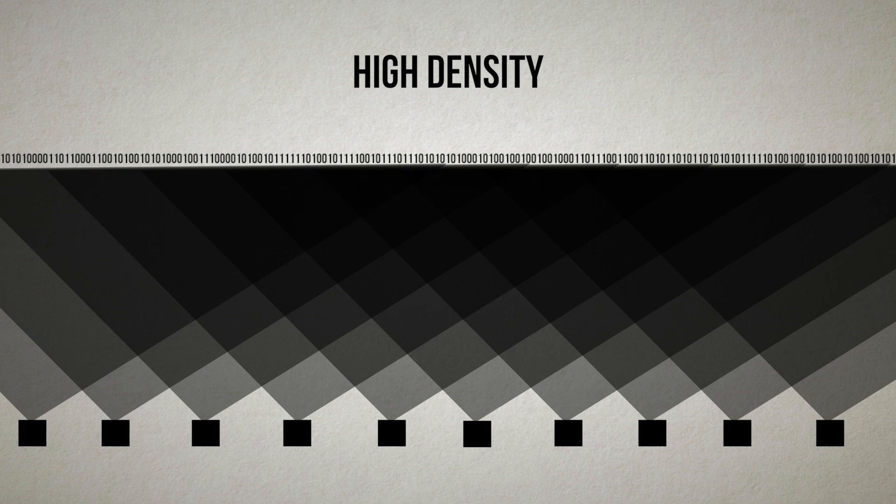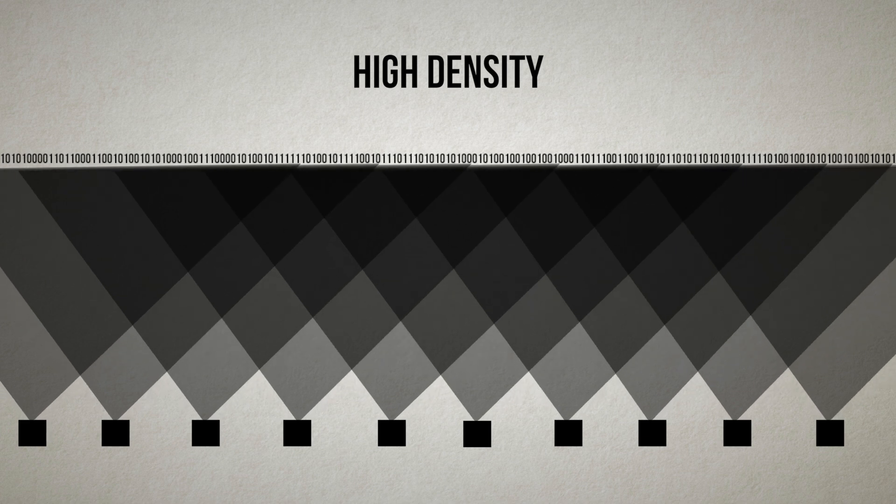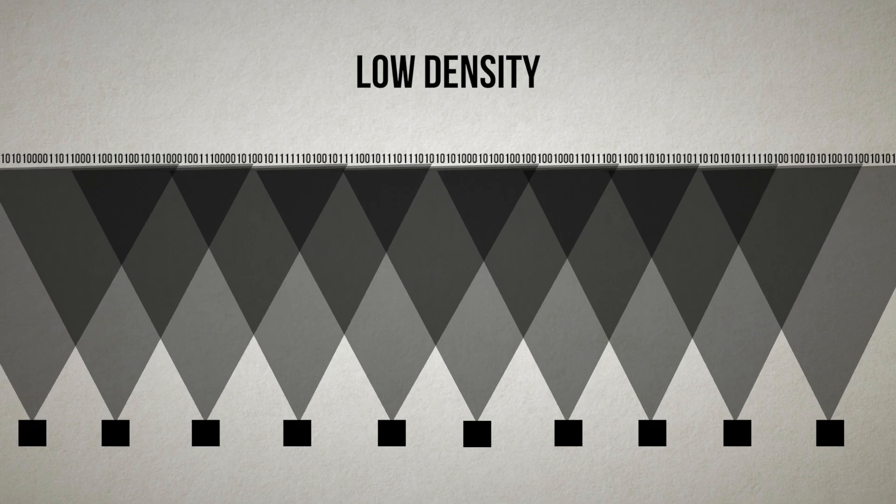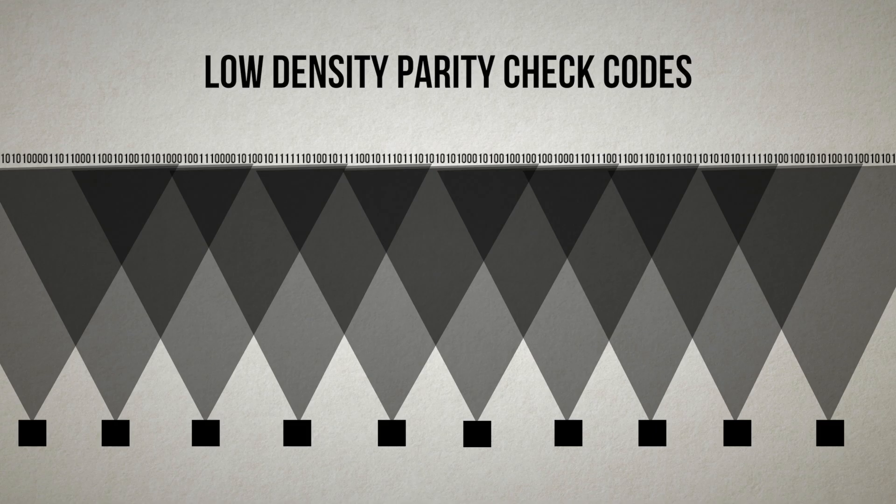With larger subsets we have a high density, that is each message bit is connected to many parity check bits. With smaller subsets we have a lower density, that is each message bit is connected to fewer parity check bits. And this is where the name low density parity check codes comes from.